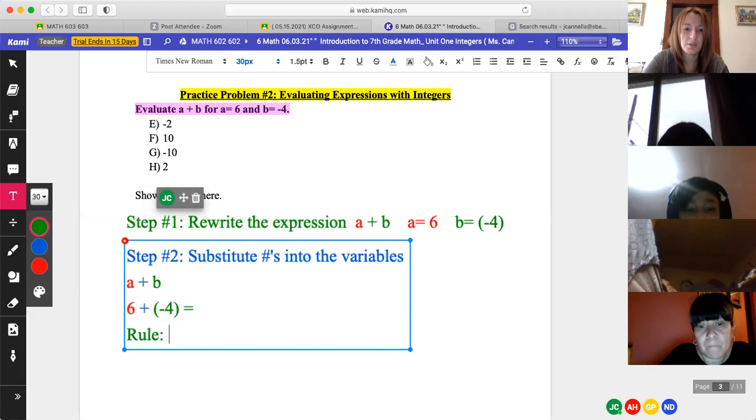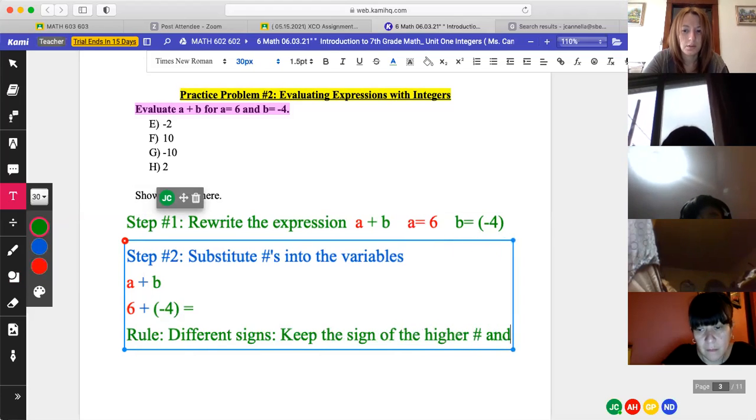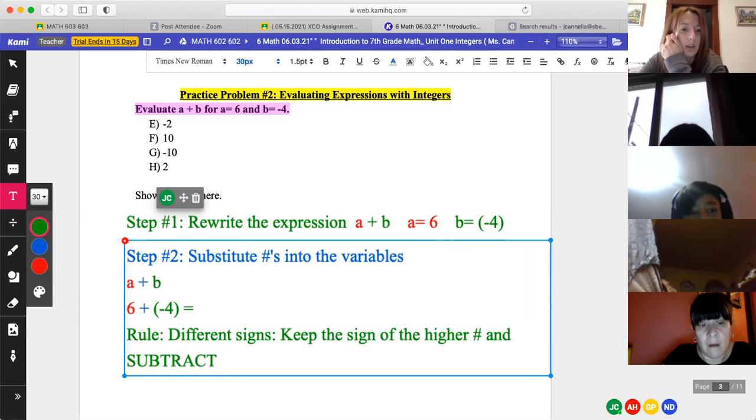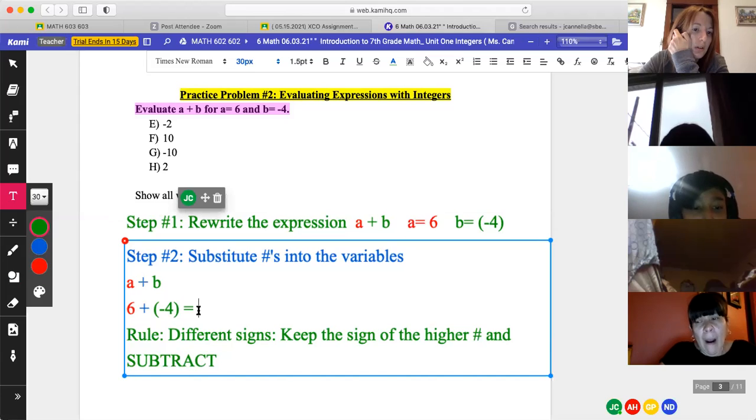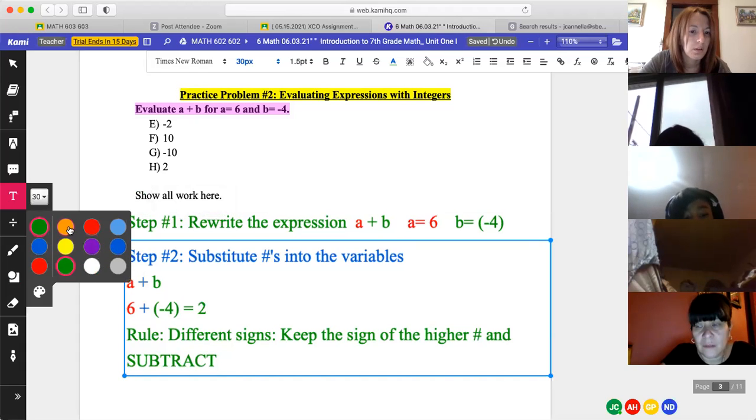So for step one, we have to rewrite the expression. And for step two, we have to substitute into variables. So A plus B and 6 plus negative 4. So what we do is we've got to put the number 6 plus negative 4, right? Yeah. Now what is the rule? Signs are the same or signs are different? Signs are different. And then what does the rule say? Keep? Keep the sign of the higher and subtract.